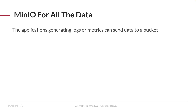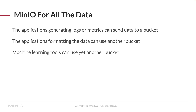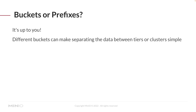By using MinIO for all of the data, you can have all of your applications generating logs or metrics — all of that can be sent into a particular bucket that your application can then access. The application formatting the data could use another bucket: maybe it pulls the raw log data from that location, does some pre-processing, and puts it in another bucket. And then your machine learning tools can output their models to yet another bucket. That makes it very simple to have all of these different locations for all of your data. By using different buckets, it makes separating the data between tiers or clusters very simple — you just move the bucket to a new cluster or whatever you need to do.